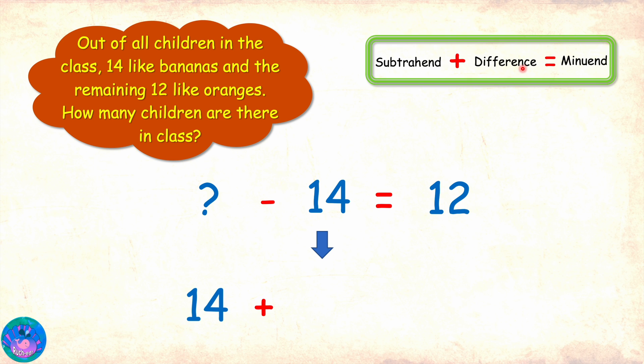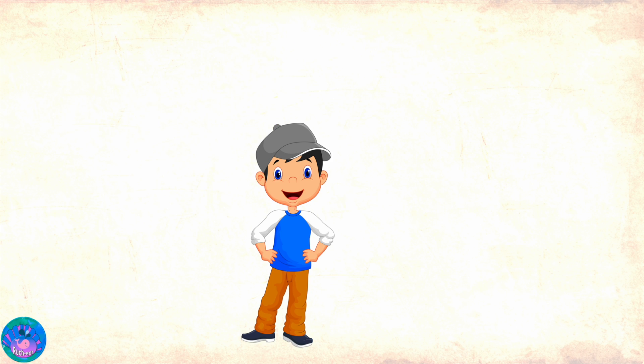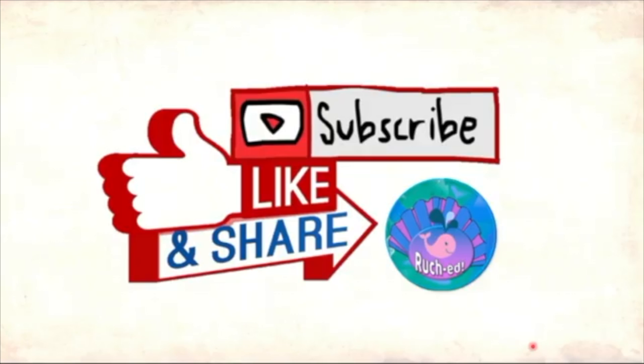Now we have learnt that we can get the minuend by adding subtrahend and the difference. So 14 plus 12 equals 26. Hence the total number of children in class is 26. This is super cool Miss R. Thanks for teaching me. You are most welcome Sam. Until next time, please like, share and subscribe.